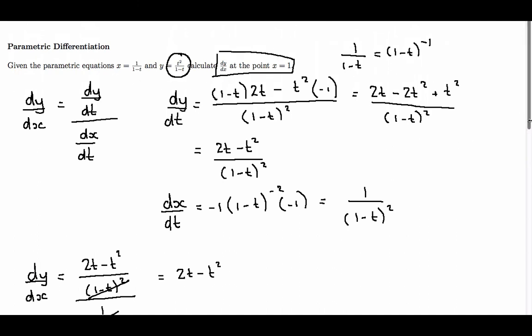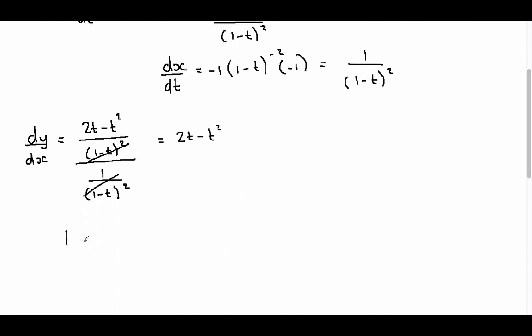I set x equal to 1 and solve the equation. So I need to find the value of t from this equation. A simple rearrangement tells me (1 minus t) equals 1, therefore t equals 0. When x equals 1, t equals 0.